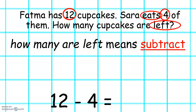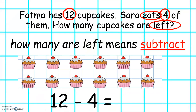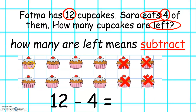Twelve take away four. You can use your number line, you can use different things to help you to subtract. Here we have twelve cupcakes. Let's take four away: one, two, three, four. And we can count how many are left: one, two, three, four, five, six, seven, eight. Twelve take away four equals eight.